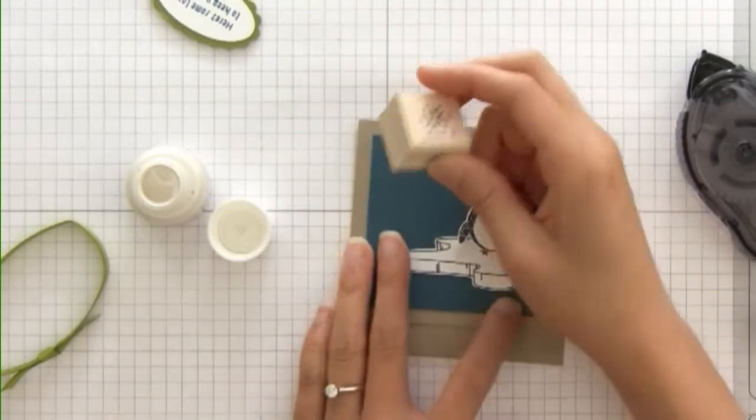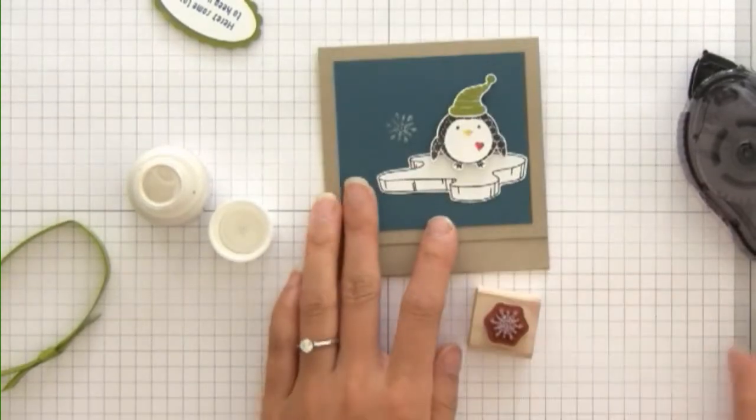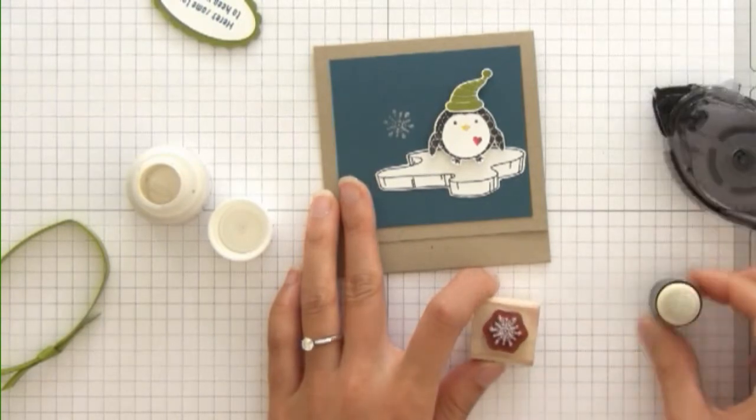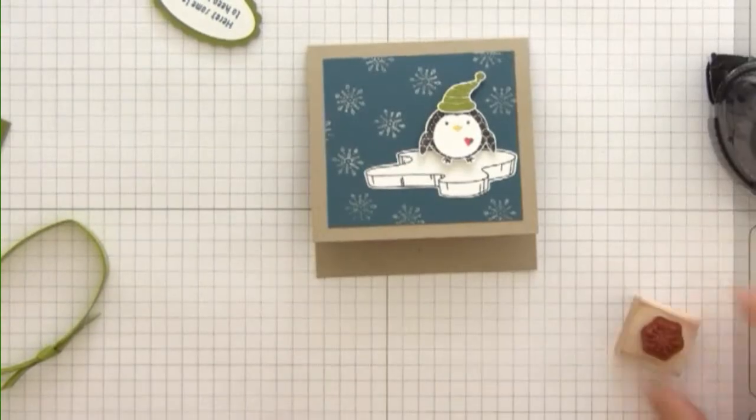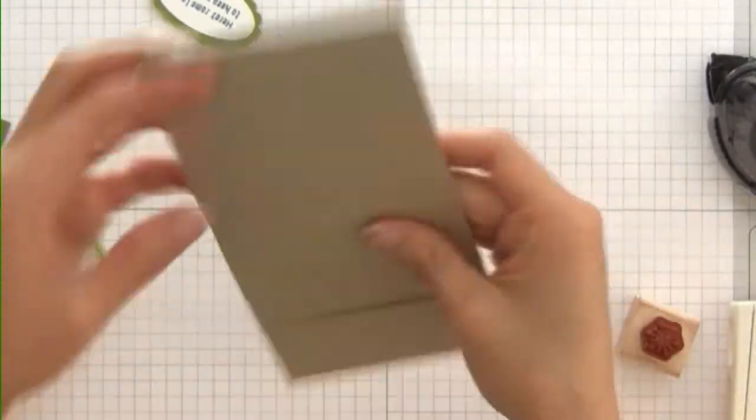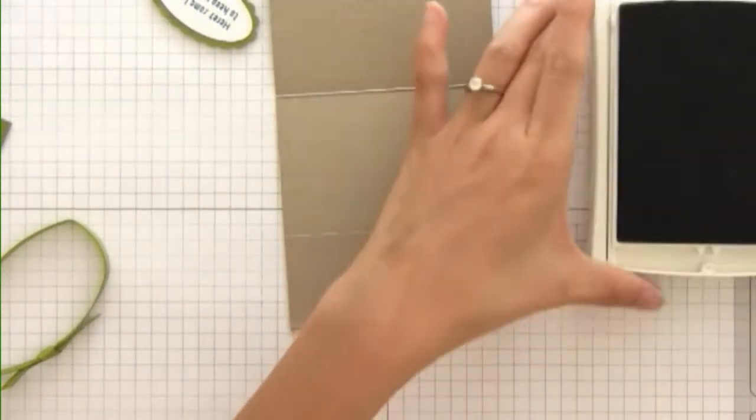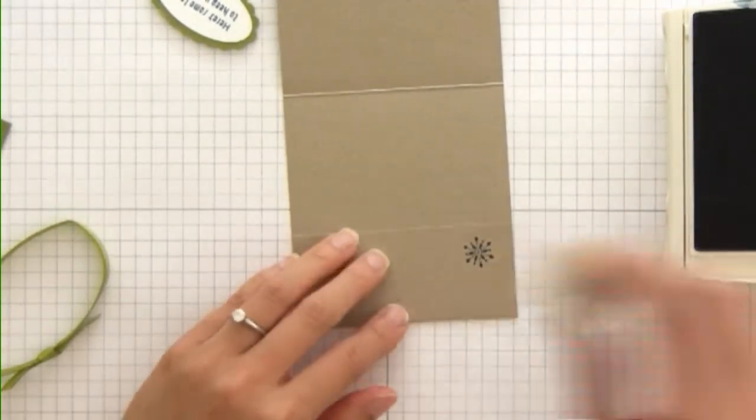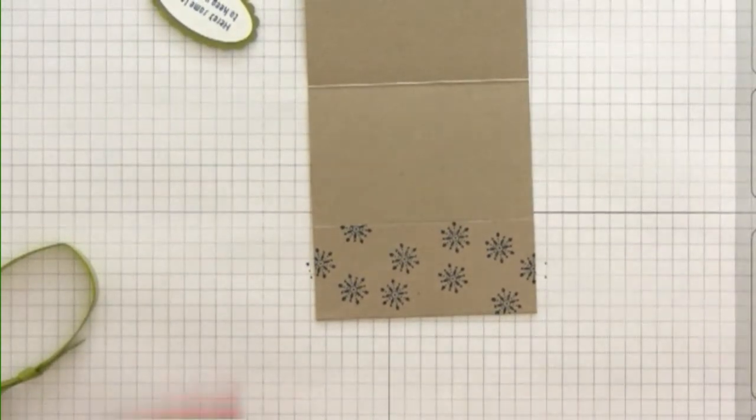You can use your Stamp-a-ma-jig for this, but I kind of just like to eyeball it. I'm going to open it up and use Not Quite Navy for the inside and stamp some snowflakes as well. That just adds a little extra to your project.